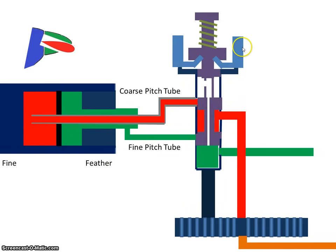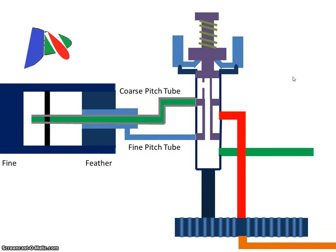We've gone from an over-speed condition, where the flyweights are out, back to an on-speed condition, purely by the action of the propeller governor. The opposite is what we call an under-speed condition. When that occurs, the prop is going at a lower speed.